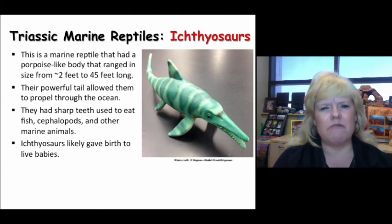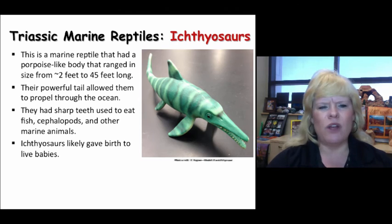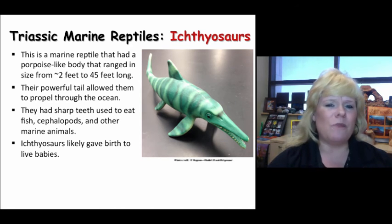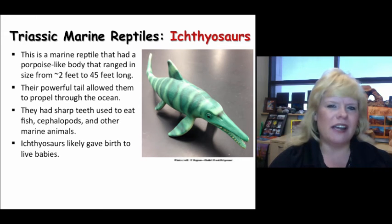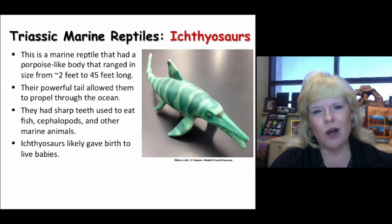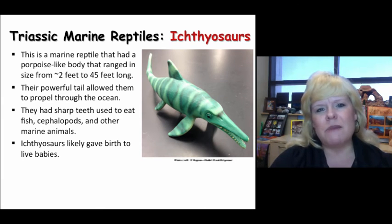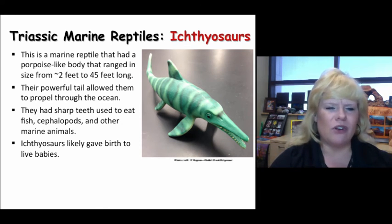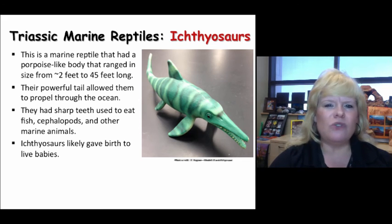It is thought that ichthyosaurs gave birth to live young, much like a dolphin would today. They ranged from just a couple of feet long to literally school bus size — about 45 feet long. These were predatory animals that would eat fish and ammonites; we actually find ammonite remains in ichthyosaur stomach contents in the fossil record. Any other available marine animal, including smaller ichthyosaurs, would have been on their radar. Ichthyosaurs were marine reptiles — they are not dinosaurs.